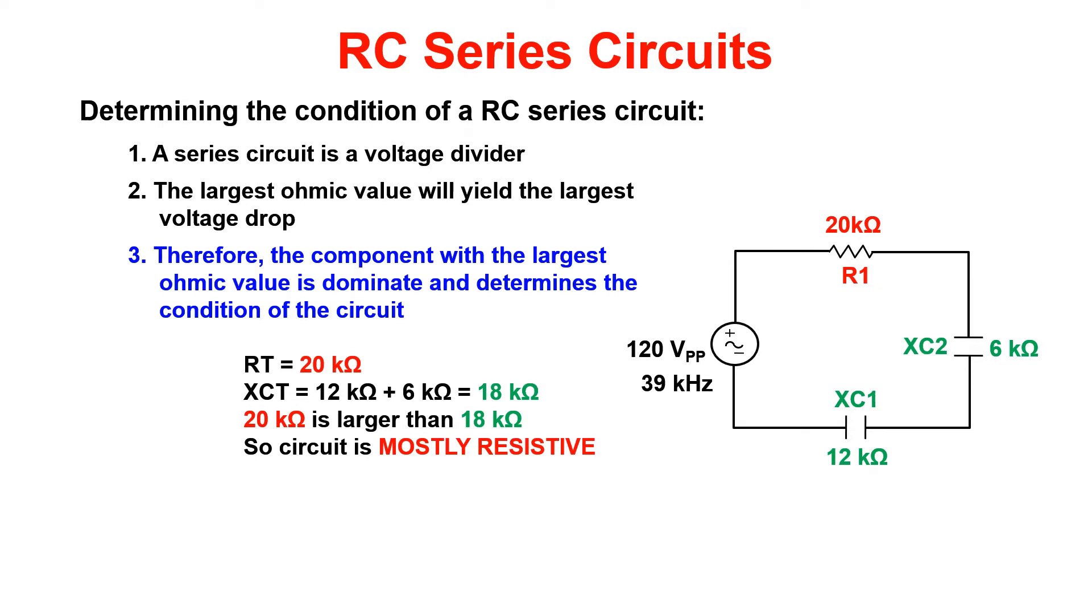In the example we see that our resistive portion of the circuit is 20k ohms and our capacitive portion is 18k ohms. Therefore we would say that this circuit is mostly resistive.